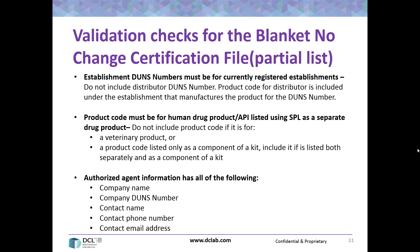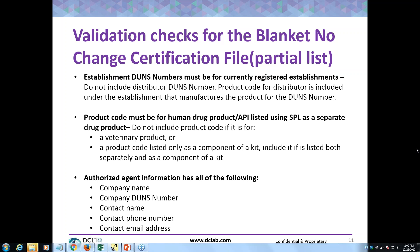My overall tip with any SPL file is do what you can to make sure you don't get validation errors. Some of them are legitimate — for example, if you change the imprint on the drug, the product code has to change. So if you submit a new listing for that drug with the new imprint but keep the same NDC number, you'll get a validation error because you changed the product characteristic of imprint. The regulations say you've got to change the product code.